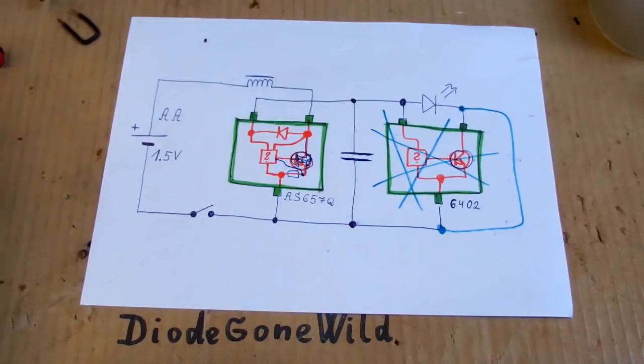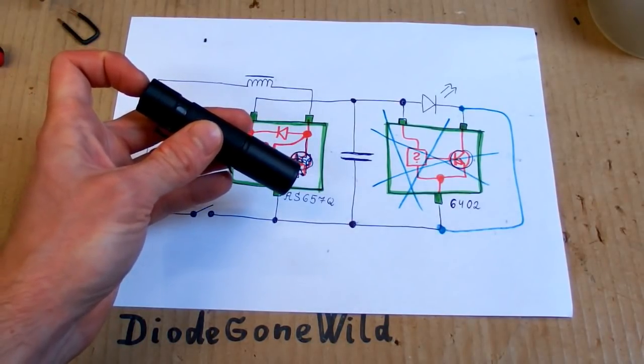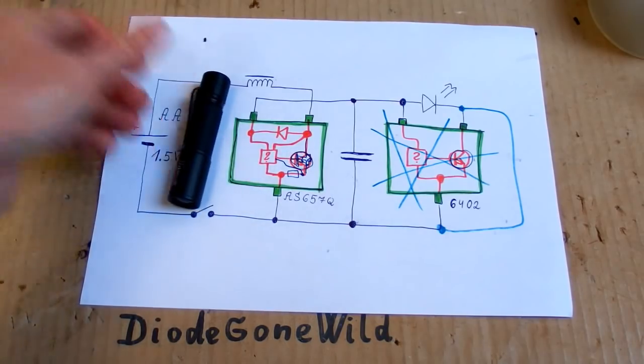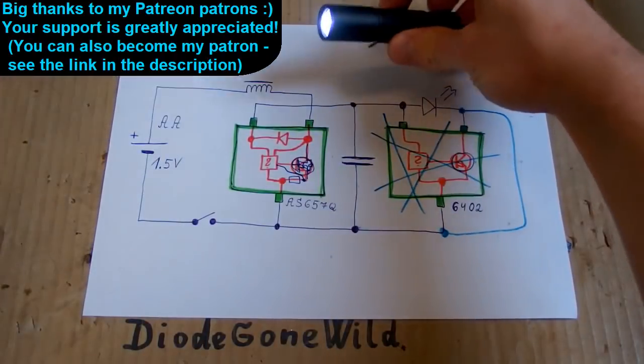But there is no external current sensing resistor, so there is no way of changing the operating current unfortunately. But I believe that it runs at a reasonable current anyway, so I don't have to change it. So this is DiodeGoneWild and see you in my next videos.